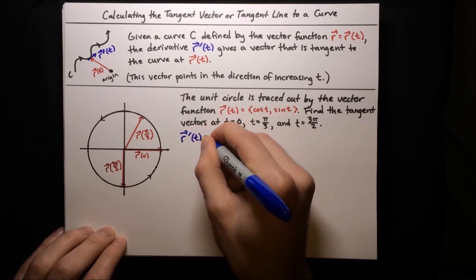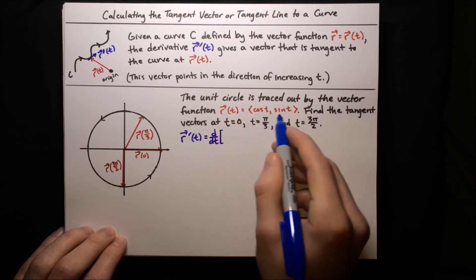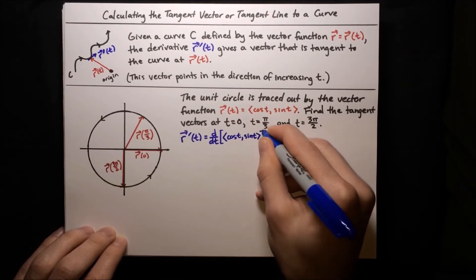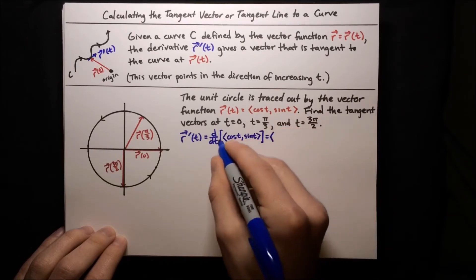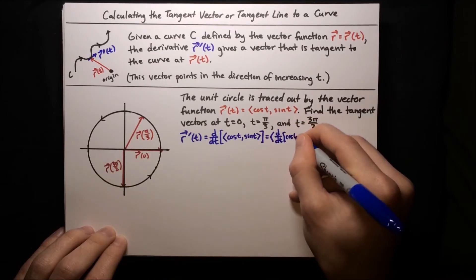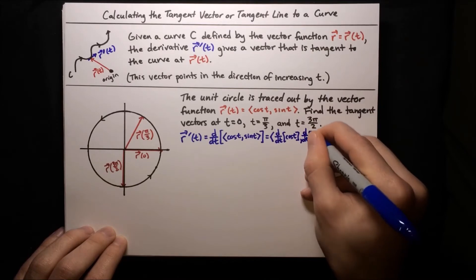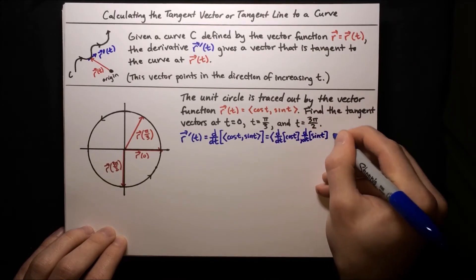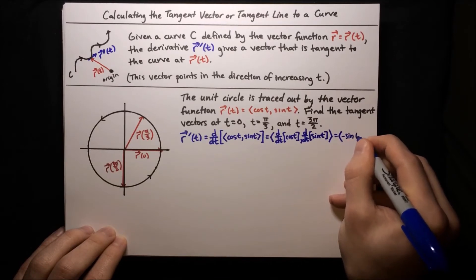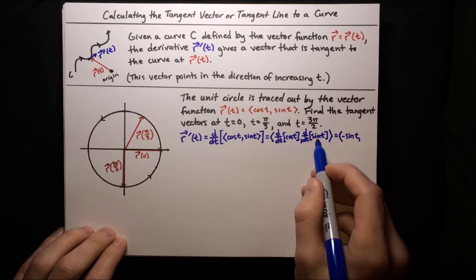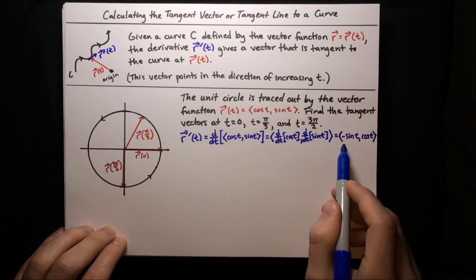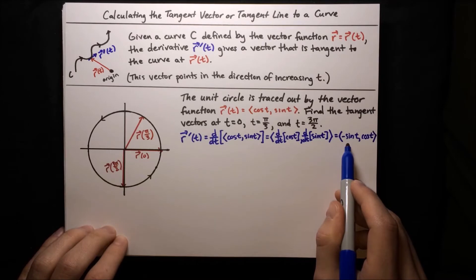We can do that by taking d over dt of that vector, d over dt of cosine t, sine t. We take the derivative of each component: d over dt of cos t as the first component, and d over dt of sine t as the second component. The derivative of cosine is negative sine, so the first component is negative sine t. And the derivative of sine t is just cosine t. So r prime of t equals negative sine t, cosine t — that's our tangent vector at any point t.